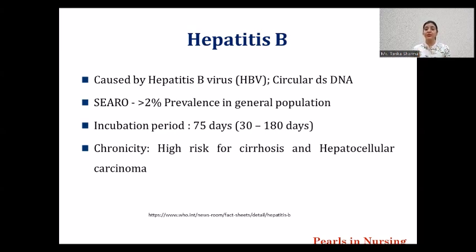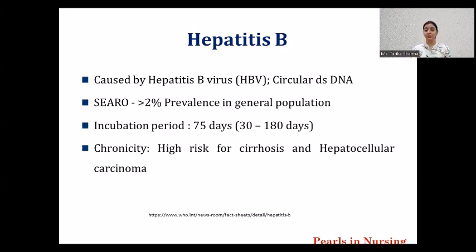Chronic infection with Hepatitis B is common, which may lead to complications such as cirrhosis and hepatocellular carcinoma. Cirrhosis is an irreversible condition where hepatocytes are completely damaged and there is scarring of the liver cells. Hepatocellular carcinoma is a condition where there is a primary liver tumor — when cancer happens in the liver cells, it is known as hepatocellular carcinoma.